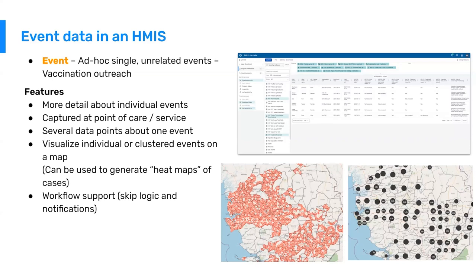Event data also has workflow support. Aggregated data entry is relatively straightforward, but event data can be much more complex and subsequently provide a lot more support to individual health workers entering the data. As they go in and enter data into the reporting form, the form can flash alerts and notifications about corrective behavior needed or actions to take based upon the data entered. It could also alert them to potential data entry or data quality problems detected, or prompt them to take different actions. There is a lot of flexibility in DHIS-2 to build in workflow support. One commonly used feature is skip logic, where as a person enters data, different questions reveal themselves or are hidden based on answers to previous questions, guiding the workflow through the reporting form.